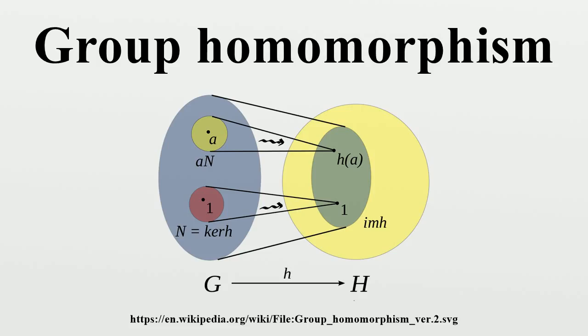Epimorphism - a group homomorphism that is surjective, i.e., reaches every point in the codomain. Isomorphism - a group homomorphism that is bijective, i.e., injective and surjective.